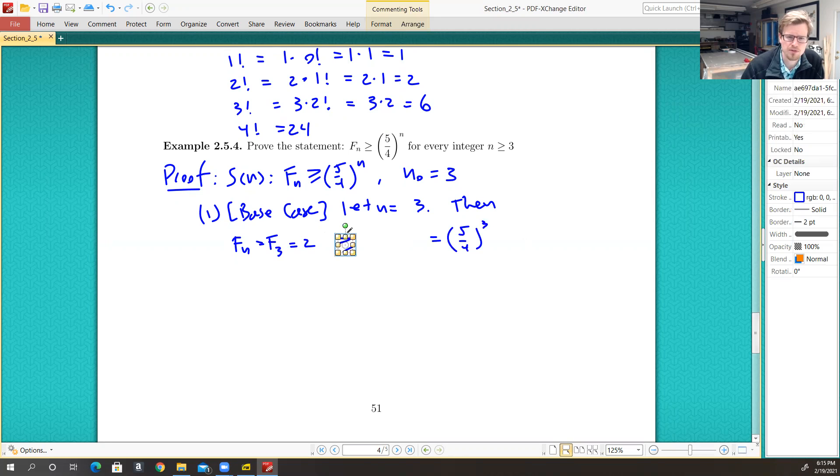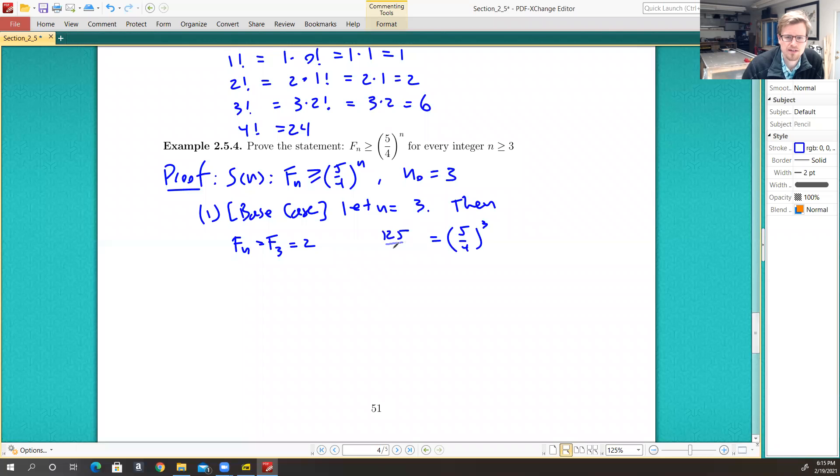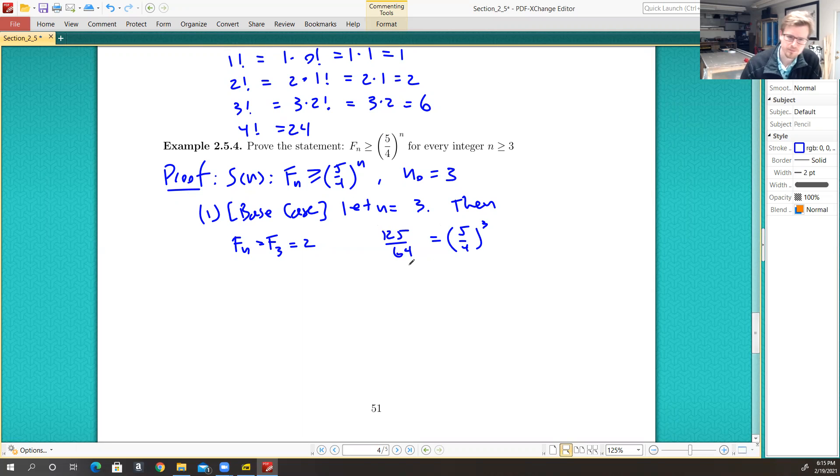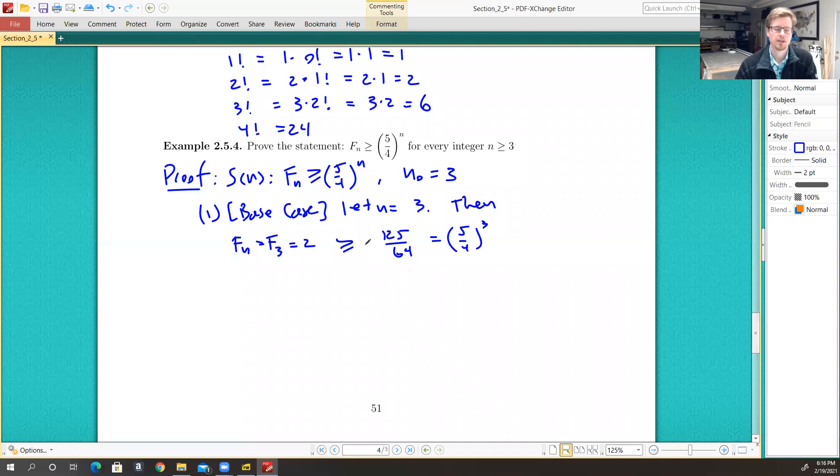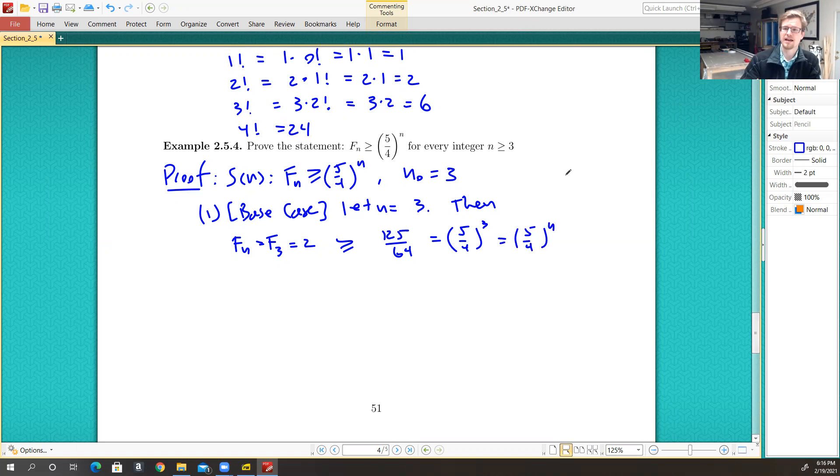Well, 5 quarters cubed is 125 divided by 64. And this number here is just under 2. So 2 is more than this number. If I wanted to have 2 with a denominator of 64, this number written over 64 would be 128. 128 over 64 is definitely more than 125 over 64. It's awfully close, but 2 is in fact larger. So we have, in this case, that the statement is true for n equal to 3. Thus S of 3 is true.